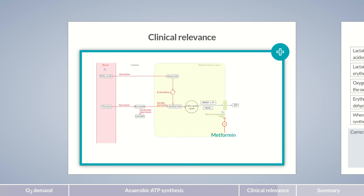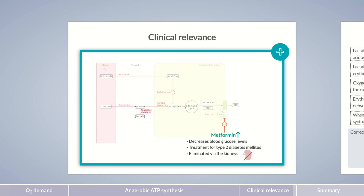As a reminder, metformin is a drug used to lower blood glucose levels in the treatment of type 2 diabetes mellitus. It's eliminated by the kidneys, so in patients with severe renal failure, it may accumulate in the body. This accumulation enhances metformin's effect. Inhibition of complex I in the electron transport chain leads to inhibition of aerobic metabolism, instead promoting lactate metabolism and lactate production. Its buildup can then lead to lactic acidosis.